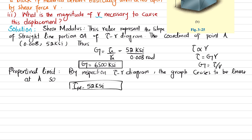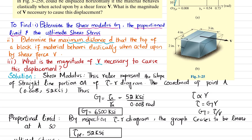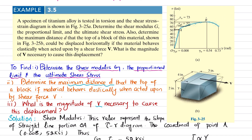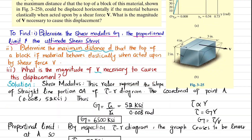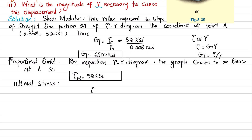The last part of this first section is the ultimate shear stress, which is the maximum stress that this titanium bar bears under torsion. You can see that at point B, this value is the maximum — the ultimate shear stress — and that is 73 ksi. So the ultimate shear stress under torsion comes out to be 73 ksi.